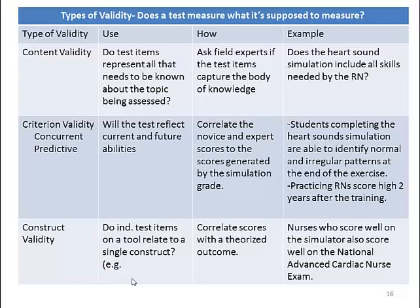The types of validity discussed in this course are three. Validity is defined as: does a test measure what it's supposed to measure? There's content, criterion, and construct validity. For content validity, do test items represent all that needs to be known about a particular topic? For example, a group of nursing instructors want to develop a simulation experience on heart sounds. They would go to an expert in the field and ask them to write down all of the items a nurse needs to know about assessing heart sounds. It's pretty easy to do content validity on a test.